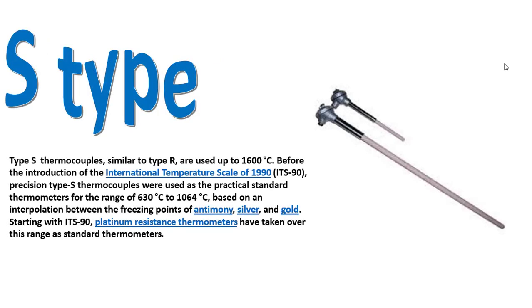Type S thermocouples, similar to Type R, are used up to 1600°C. Before the introduction of the International Temperature Scale of 1990 (ITS-90), precision Type S thermocouples were used as the practical standard thermocouples for the range of 630°C to 1064°C, based on interpolation between the freezing points of aluminum and gold. Since ITS-90, platinum resistance thermometers have taken over these ranges as the standard thermometers.